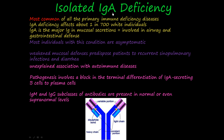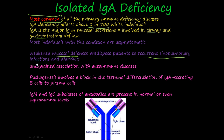Next, we have isolated IgA deficiency. It's the most common of all the primary immune deficiency diseases, affecting 1 in 700 white individuals. IgA is the major immunoglobulin in mucosal secretions involved in the airway and GI tract. Most individuals with this condition are asymptomatic, but because of the weakened mucosal defenses, patients are predisposed to reoccurring sinopulmonary infections and diarrhea — problems with the airway and GI tract.